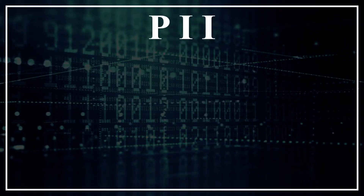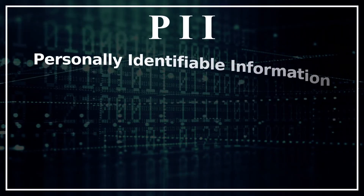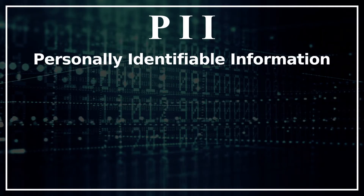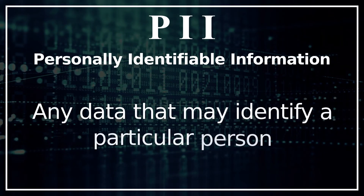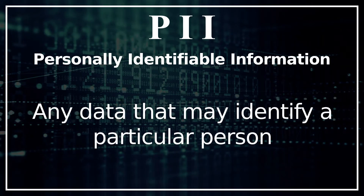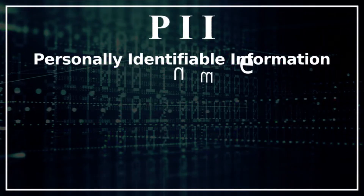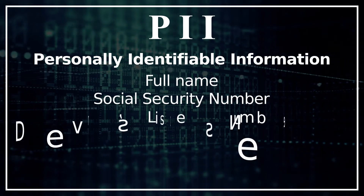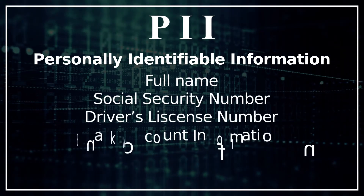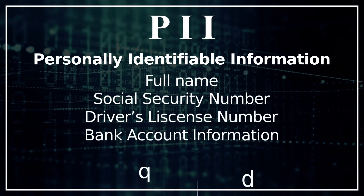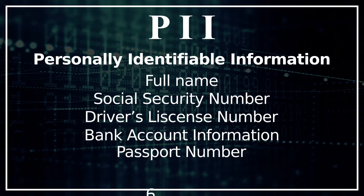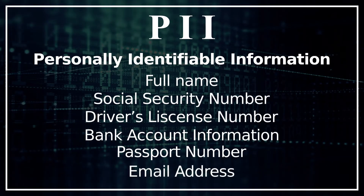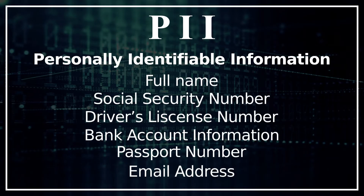PII stands for Personally Identifiable Information, which is any data that may identify a particular person. Full name, social security number, driver's license number, bank account information, passport number, email addresses — these are all considered personally identifiable information.